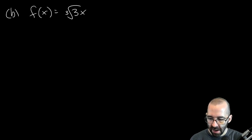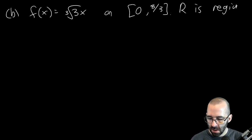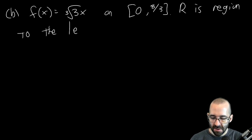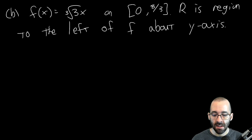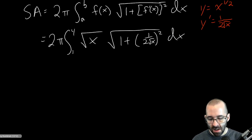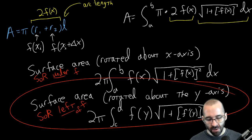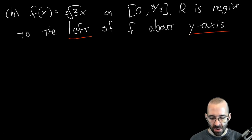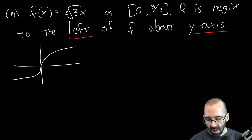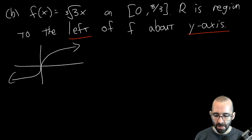Part B: the function is the cubed root of 3x on the interval [0, 8/3], where R is the region to the left of the function, and we're rotating it about the y-axis. The two key words are 'left' and 'y-axis' — we're going to need things in terms of y. It's a cubed root function that's horizontally compressed — cubed roots are one of those toolkit functions from pre-calculus.